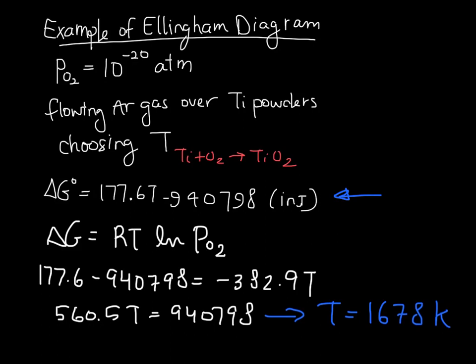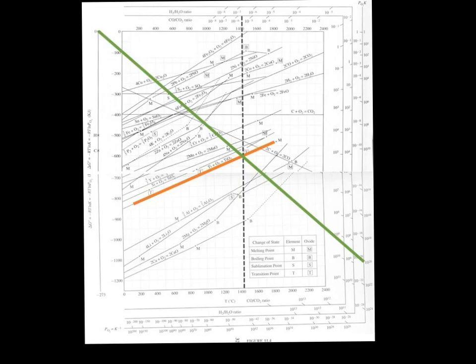We could also do this with the Ellingham diagram. The pressure that we wanted was 10 to the negative 20 atmospheres. We start by finding that point on the y-axis, then connect to our origin and make this line to indicate P equals 10 to the negative 20th.